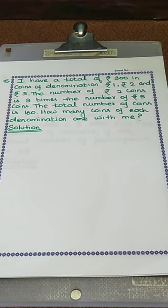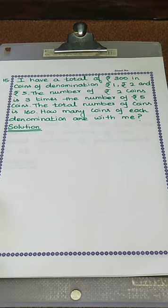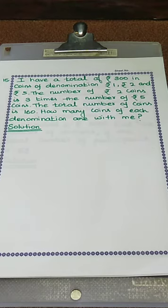Here we are discussing about coins. The total amount is Rs. 300 and the denominations are Rs. 1, Rs. 2, and Rs. 5. One clue is given: the number of Rs. 2 coins is 3 times the number of Rs. 5 coins. The total number of coins is also mentioned, that is 160.